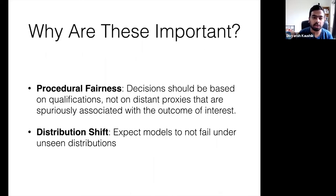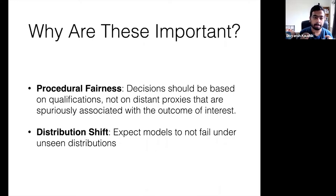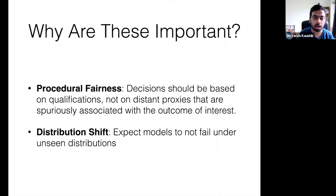There's the idea of procedural fairness — that decisions should be based on qualifications, not on distinct proxies that are spuriously correlated with the outcome of interest. If you train a model to predict whether to hire someone, but the training data has historical societal biases encoded in it, it would be wrong for the resulting model to rely on attributes like age, gender, race, or nationality. Similarly, we have the idea of distributional shift — that we expect our models to not fail under unseen distributions.